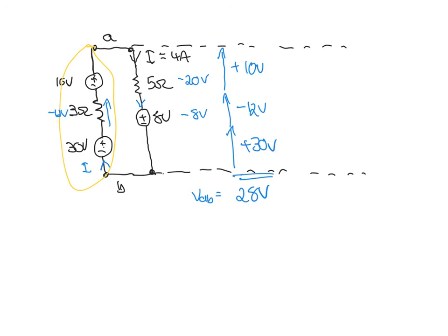so the 8 volt source is also absorbing power of 8 volts. Our calculation balances out: minus 8 volts and minus 20 volts equals minus 28 volts.